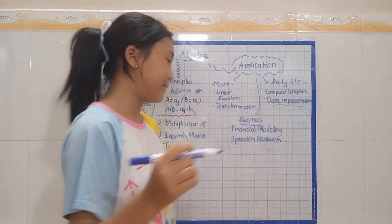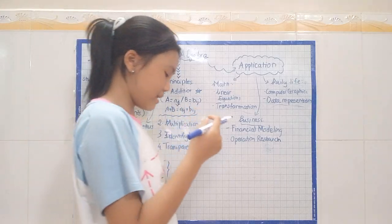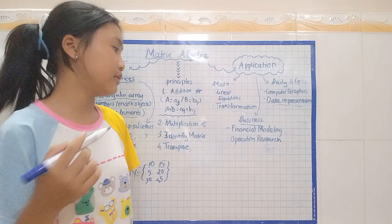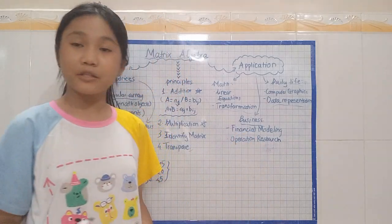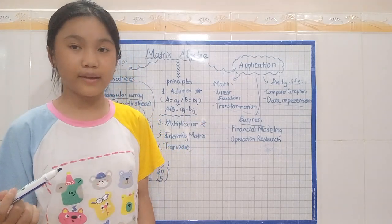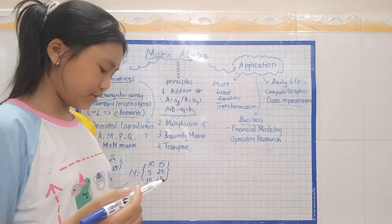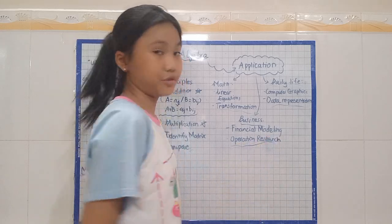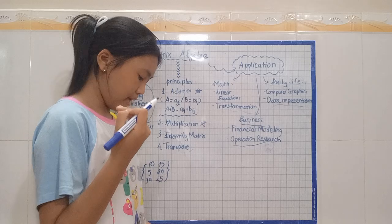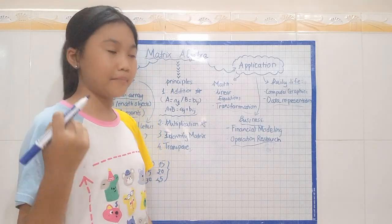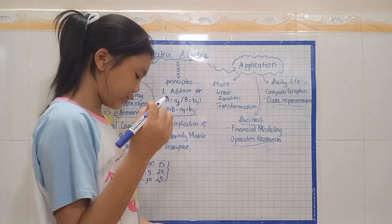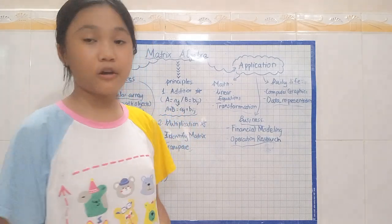Lastly, but also the most important thing is in business. It could be used to model and solve problems relevant to financial modeling. Financial modeling is actually really important, and by applying matrix algebra into solving, it could be way much more easier. Lastly, it's about operations research. It could optimize logistics, supply chain management, and resource allocation through matrix algebra.